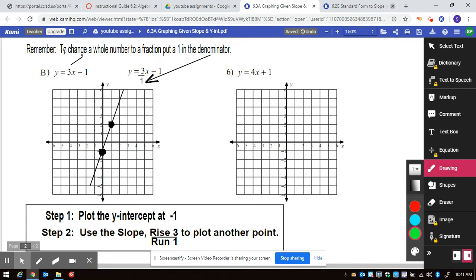So this is reminding us that if you have a whole number, any whole number can be made into a fraction by putting a one under it. So again with the y equals mx plus b, b in this case means to begin on the y-axis at negative one.